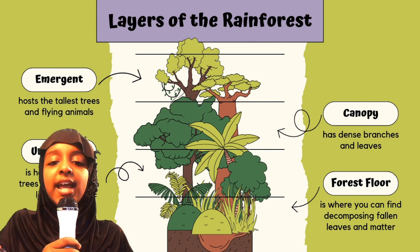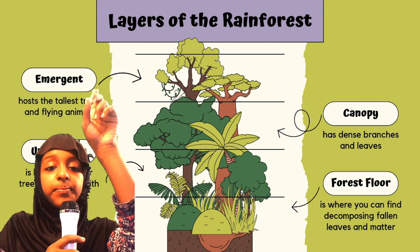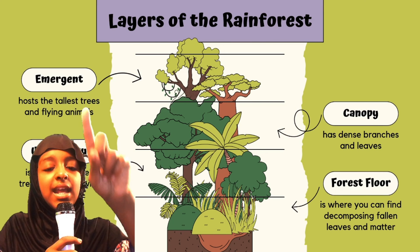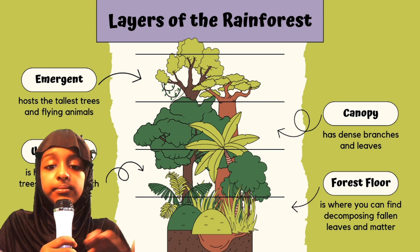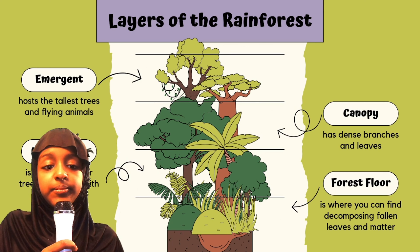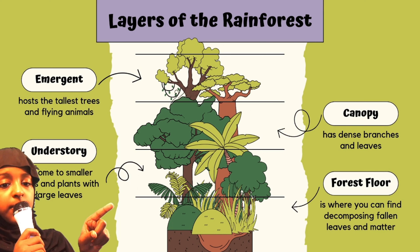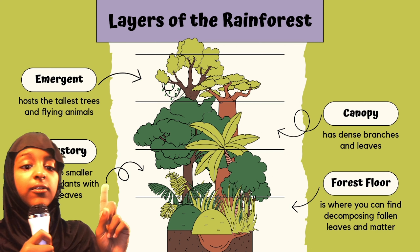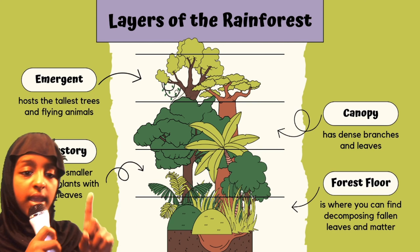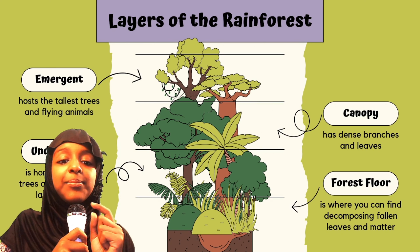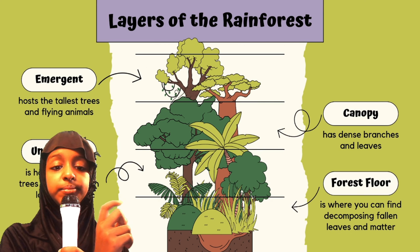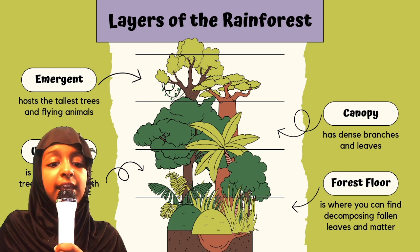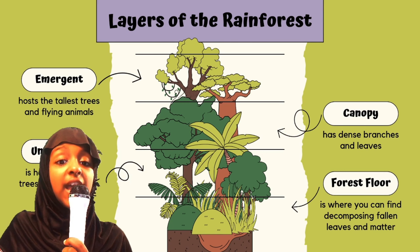Now let's go over the layers of the rainforest. The first, or the highest, layer is the emergent, which hosts the tallest trees and the flying animals. Next is the canopy, which has dense branches and leaves. Then there's the understory, which is home to smaller trees and plants with large leaves. Then at the very bottom is the forest floor, which is where you can find decomposing fallen leaves and matter. Those are the four layers of the rainforest.